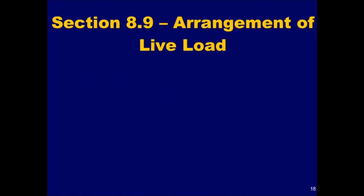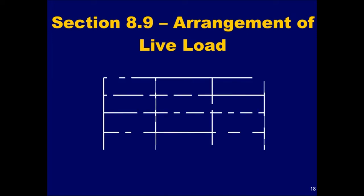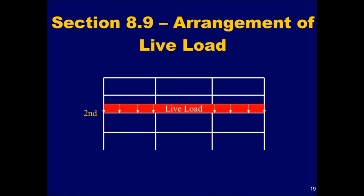The arrangement of live load on a structure is covered in the last of the four analysis assumptions. These requirements will be illustrated by using the generic building structure shown. The following assumptions apply only to gravity load analysis and not to lateral load analysis. The first assumption is that the live load is applied only to the floor or roof under consideration. For example, if we were interested in designing the beams on the second floor, the live load need only be applied at that level.